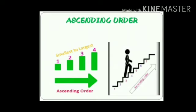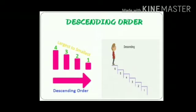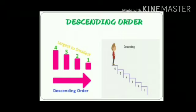Now we will learn about descending orders. Here the numbers written are 4, 3, 2, and 1. The first number is 4 — why 4? Because it is the biggest number. So here four is written first: 4, 3, 2, 1 — largest to smallest. When we arrange numbers in descending order, we start from the big numbers.